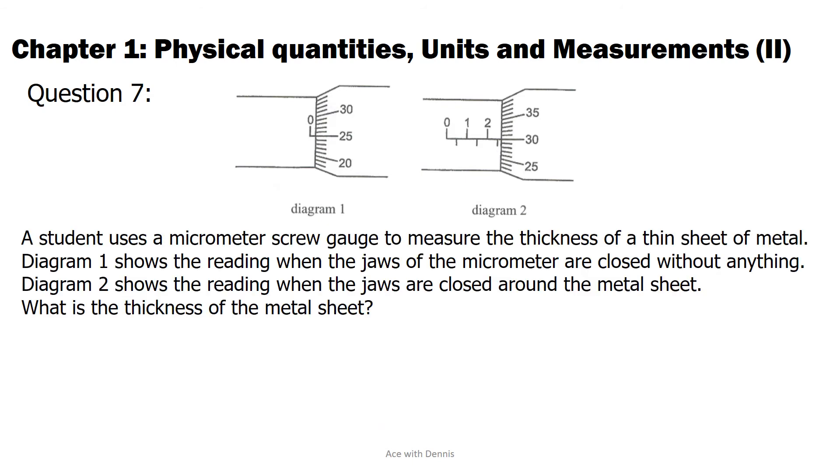Question 7. A student uses a micrometer screw gauge to measure the thickness of a thin sheet of metal. Diagram 1 shows the reading when the jaws of the micrometer are closed without anything. Diagram 2 shows the reading when the jaws are closed around the metal sheet. What is the thickness of the metal sheet?